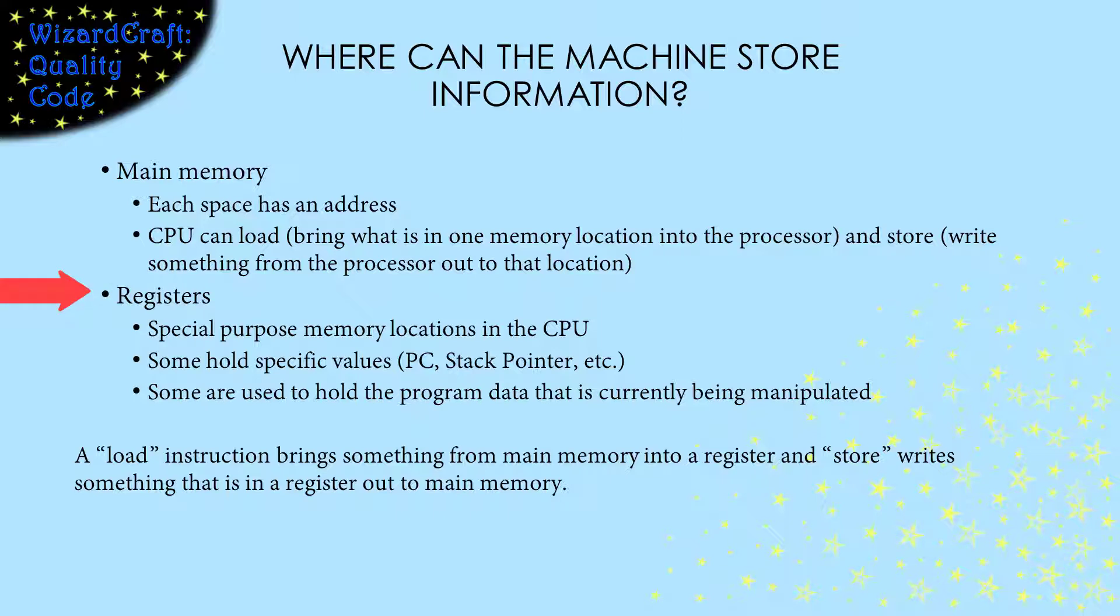The data that is in the CPU is stored in data locations called registers. There are a small number of these in the CPU. Some of the registers have specific purposes, like the ones that hold the program counter and the stack pointer. Other registers are used to hold the data that the CPU is currently working on.